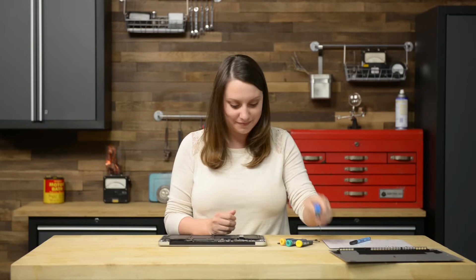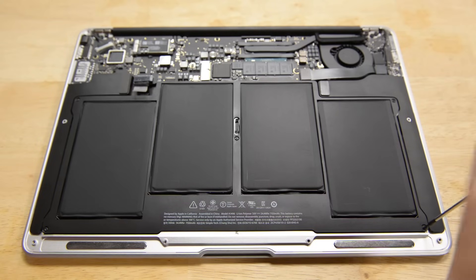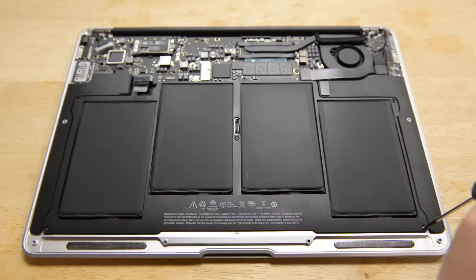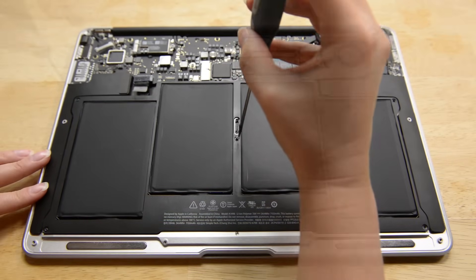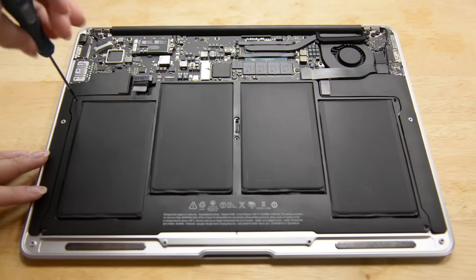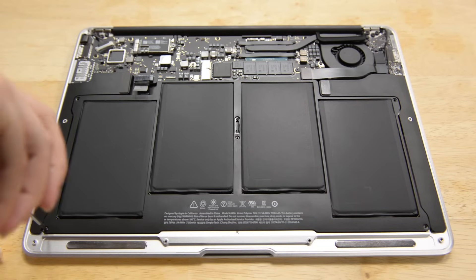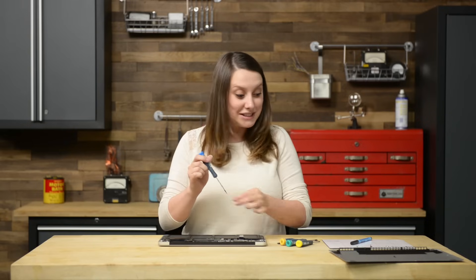Now that the battery is disconnected, let's work on removing it. Starting with the five T5 screws securing the battery to the upper case. Two of those five screws are a different size, so just make sure you label them correctly when you take them out. Take the battery out by lifting the edge nearest the logic board.